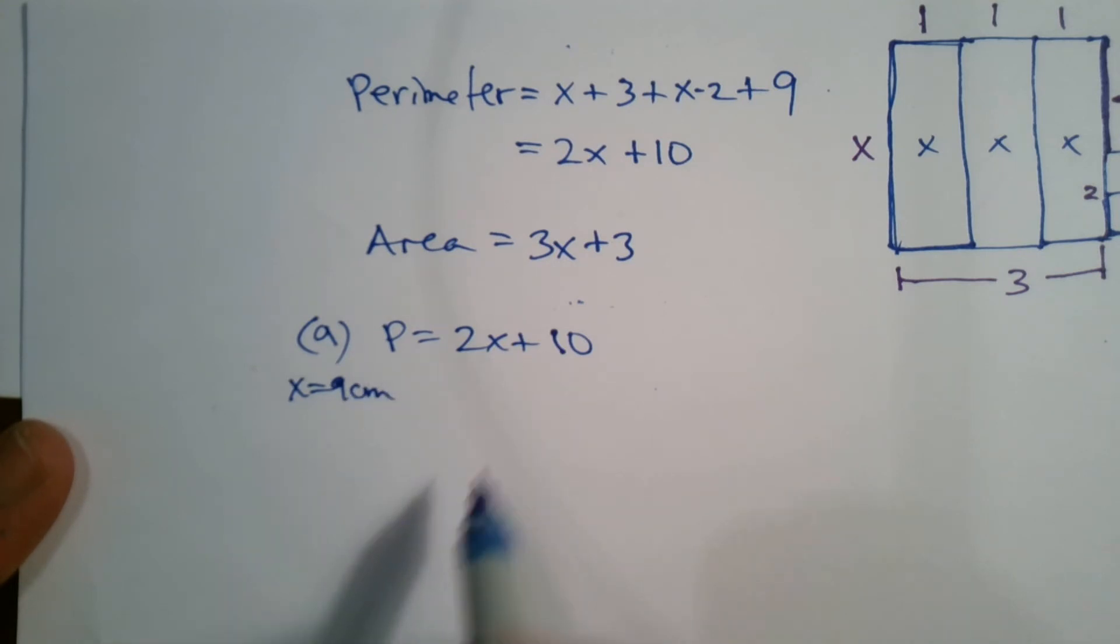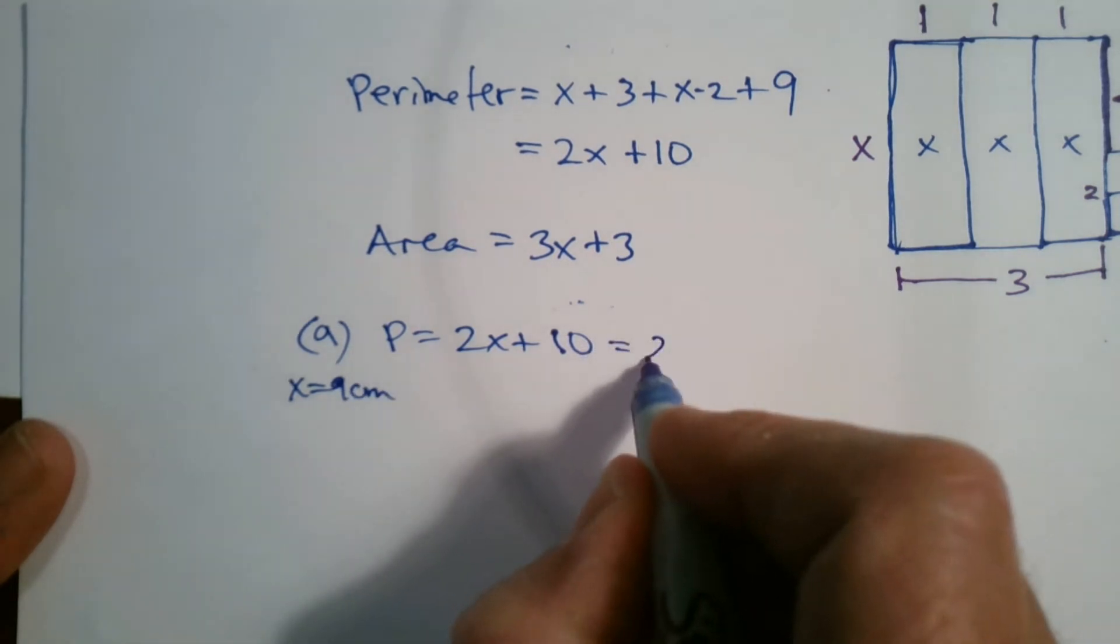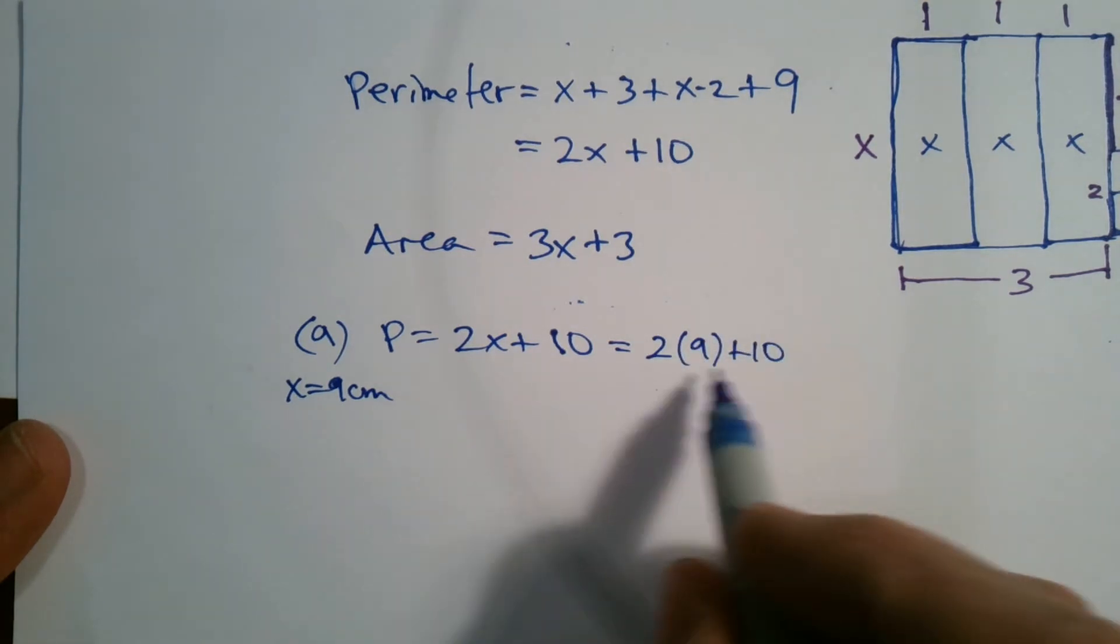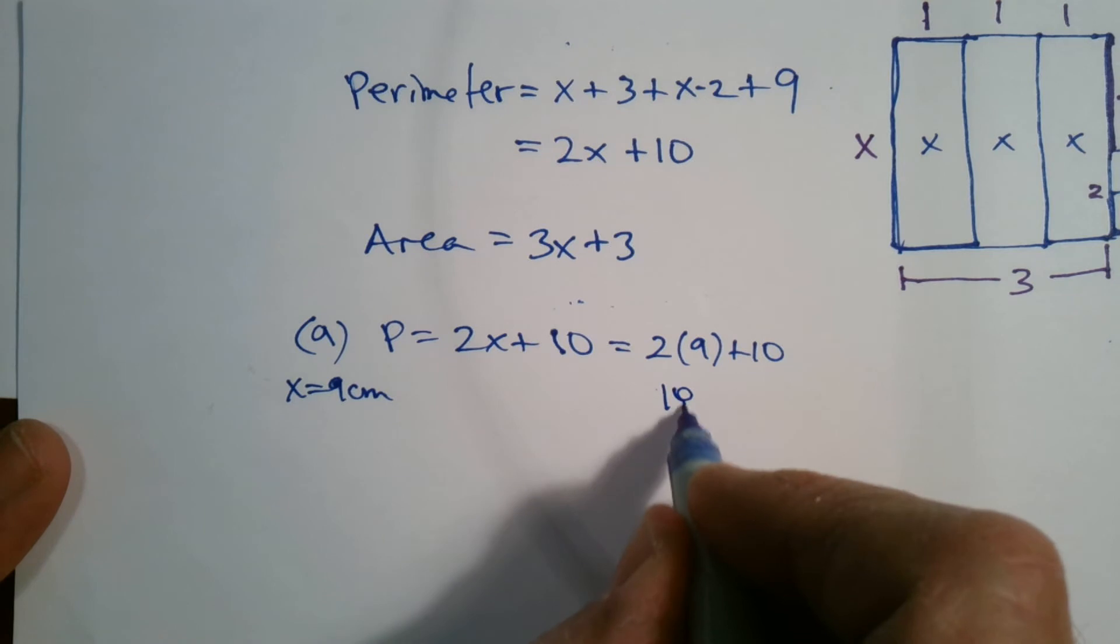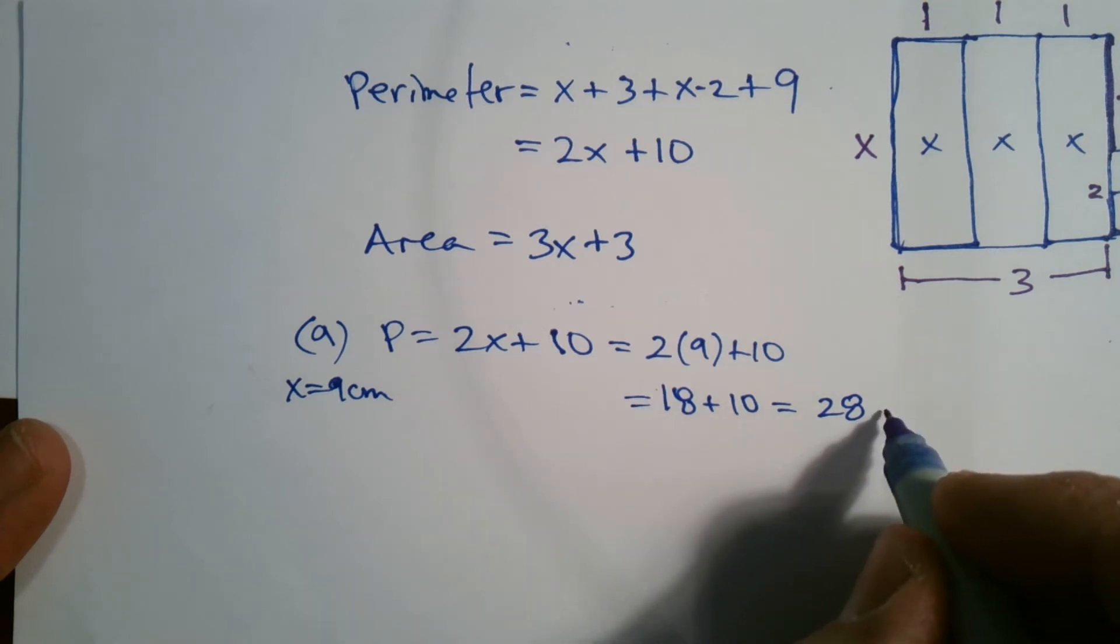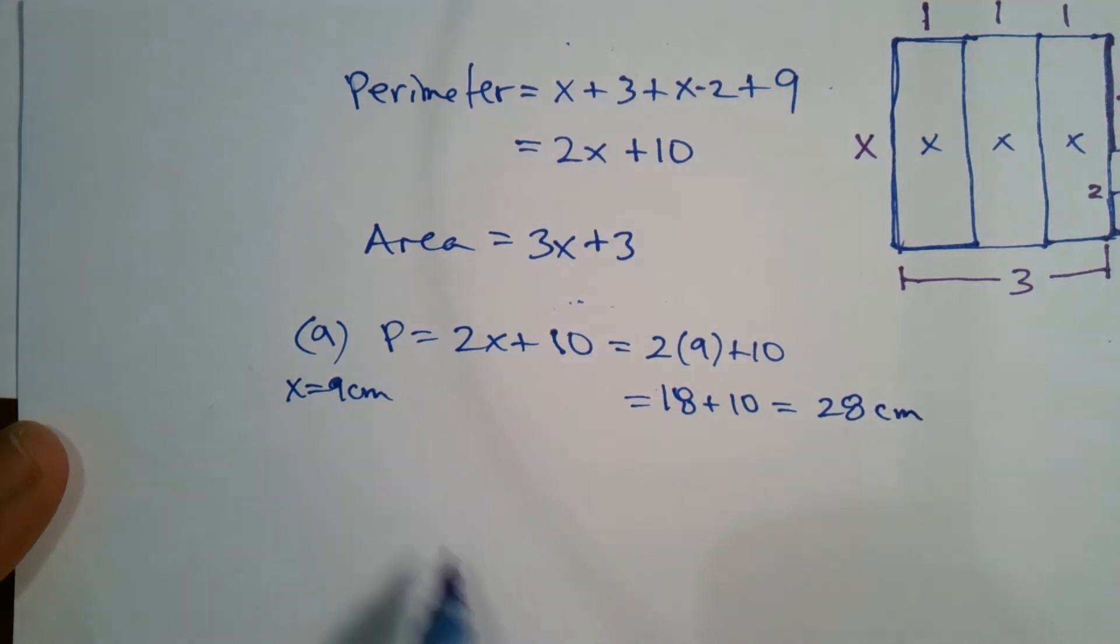So for A, they want me to use X equals nine centimeters. So I'm going to take my perimeter, I'm going to plug in nine into where X is. So the perimeter is equal to 2 times 9 plus 10. And 2 times 9 plus 10, 2 times 9 is 18, 18 plus 10, that equals 28. So my perimeter is equal to 28 centimeters for A, given that X equals nine.